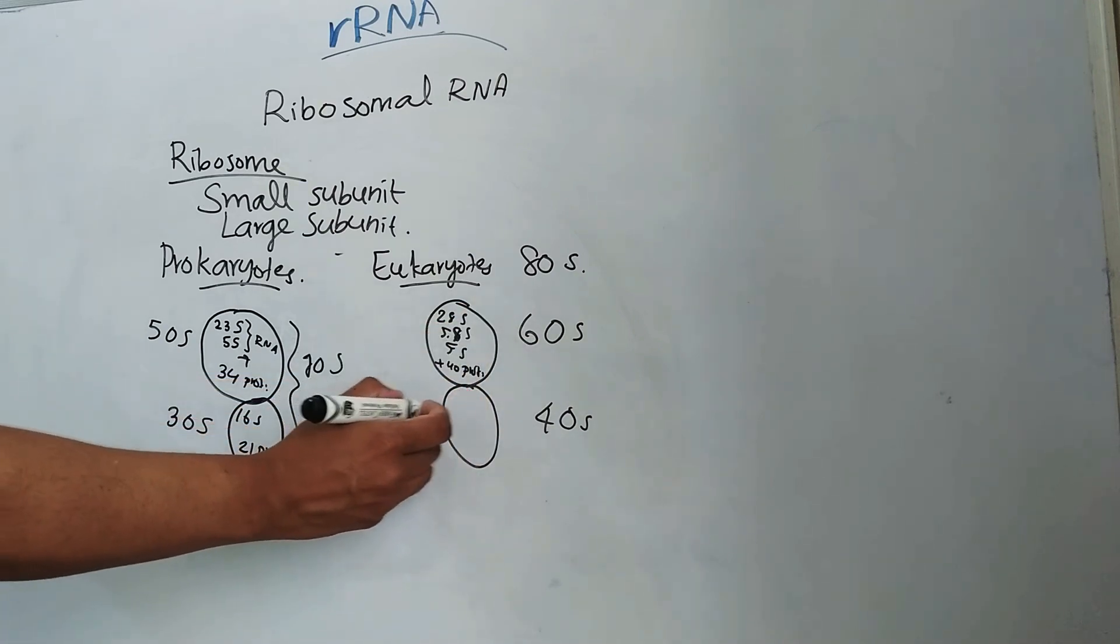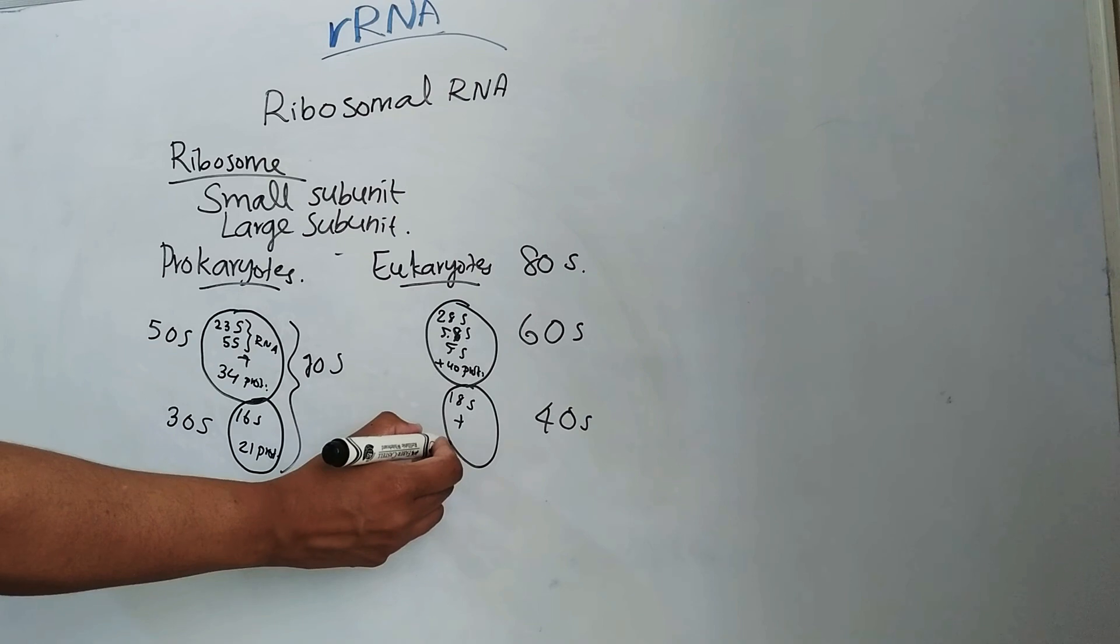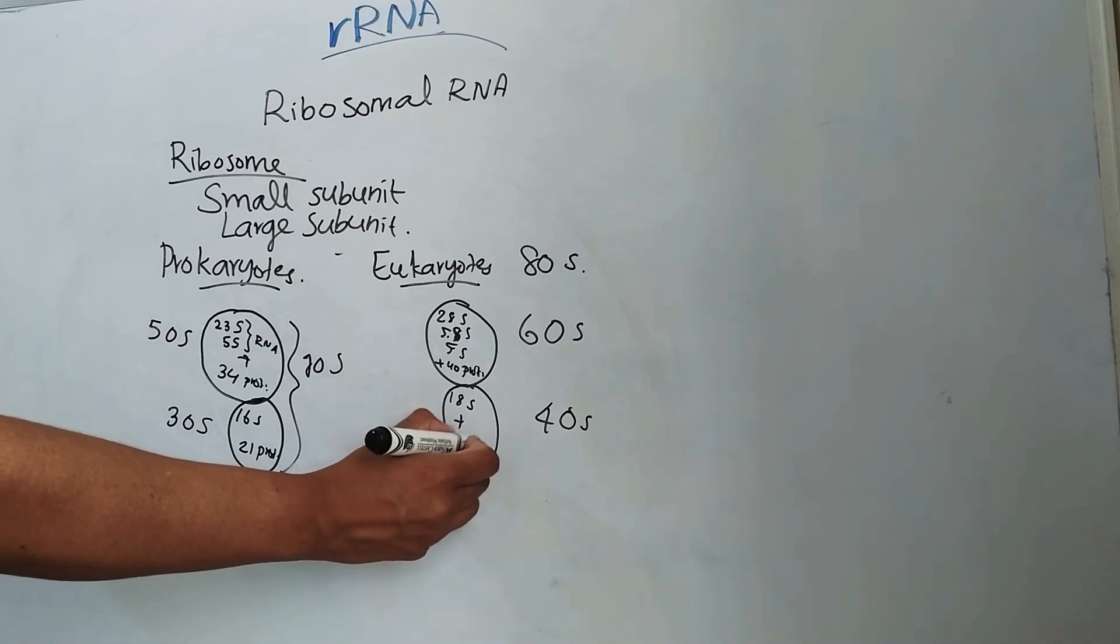Then this 40S subunit is made up of 18S RNA and 33 proteins.